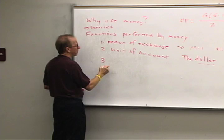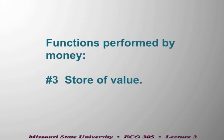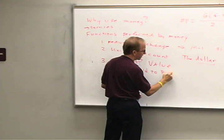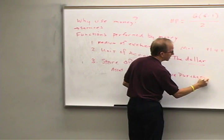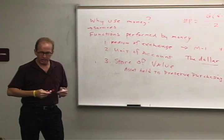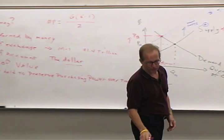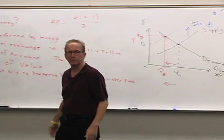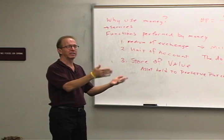The third function performed by money: money is a store of value. Money is an asset held to preserve purchasing power over time. A great example because it involves almost everybody is saving for retirement — everybody wants to get old enough to retire and revert to a lifestyle without responsibilities, and the way that happens is in your 20s, 30s, 40s, 50s, and 60s, you put something aside and save, then you retire.